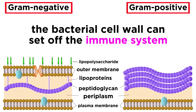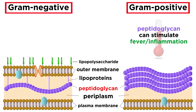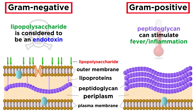The components that make up the bacterial cell wall, in particular, can set off a powerful chain reaction within the immune system. For instance, during an infection of gram-positive bacteria, the peptidoglycan and the products it breaks down into can stimulate a fever or inflammation with devastating effects on the body. Lipopolysaccharide produced by gram-negative bacteria is categorized as endotoxin. In low doses, endotoxin can activate the immune system or protective responses such as a fever. In higher doses, endotoxin can trigger extremely high fever, shock, or skin lesions, which can be deadly.